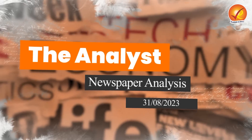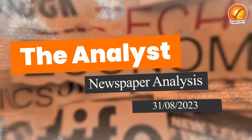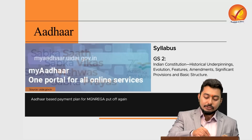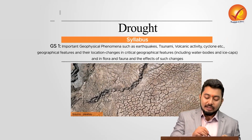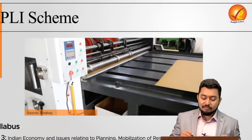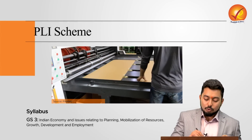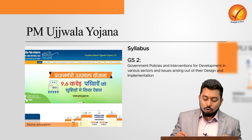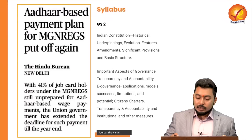Hello students, welcome to the analyst dated 31st of August 2023. Today we look at five important articles from The Indian Express and The Hindu. The first article will be regarding the Aadhaar Act and the judgment, then we look at droughts, the PLI scheme, and finally two prelim-related articles: PM Ujjwala Yojana, and a comparison of Gruha Lakshmi scheme with PM Kisan Samman Nidhi.